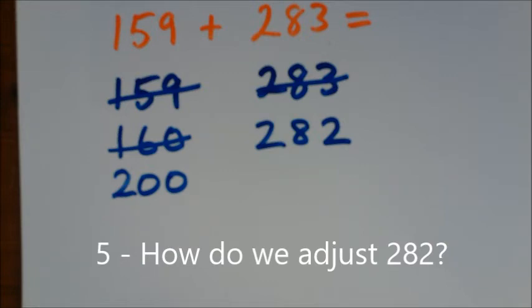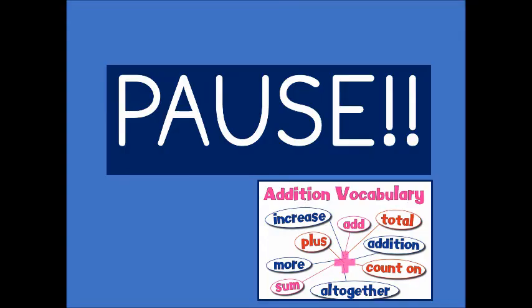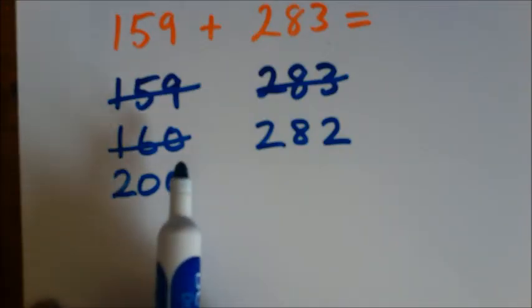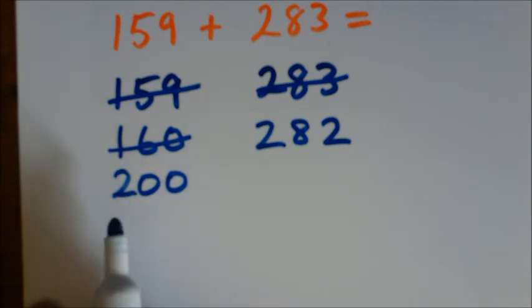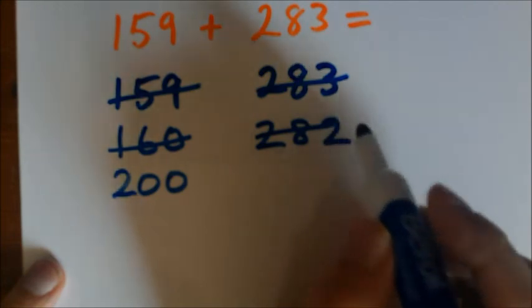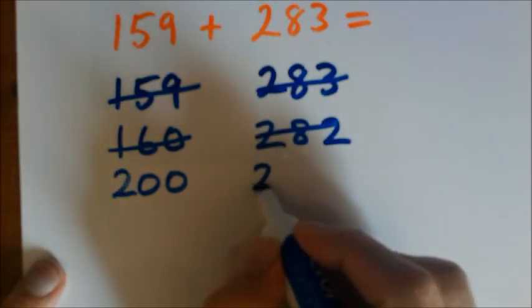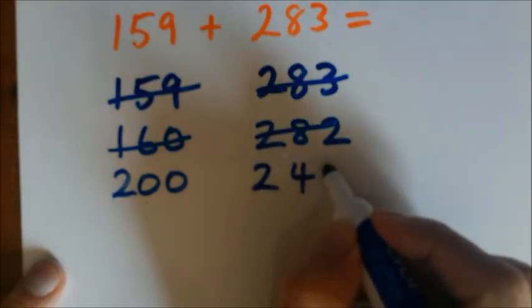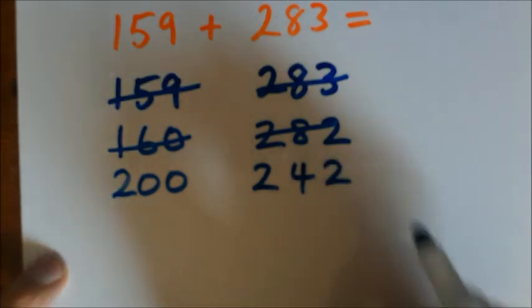How do we adjust the other number? Yes, we had to find 40 from somewhere to get this rounded up to 200. Where did the 40 come from? It had to come from the other number. So that's not 282 anymore. That's gone down, we've adjusted that down to 242.